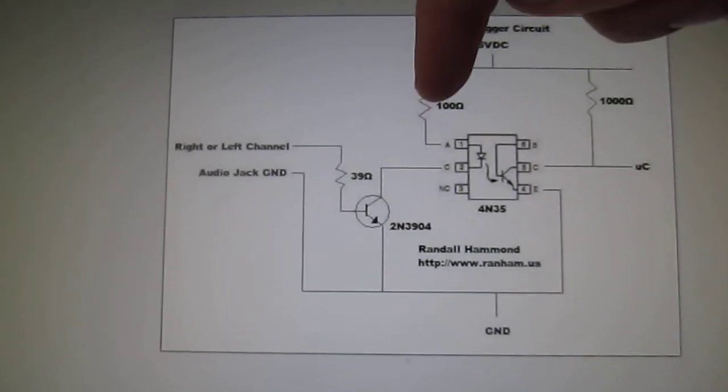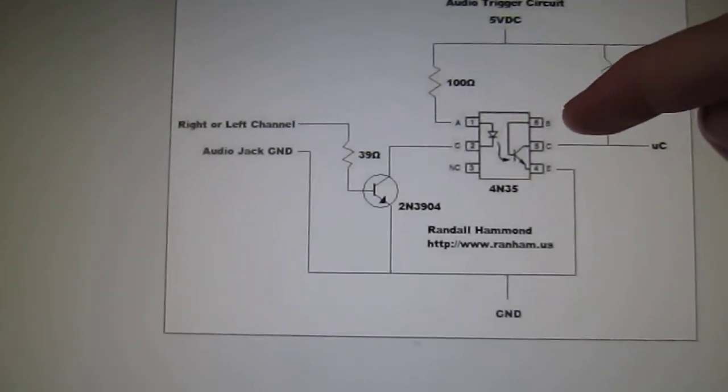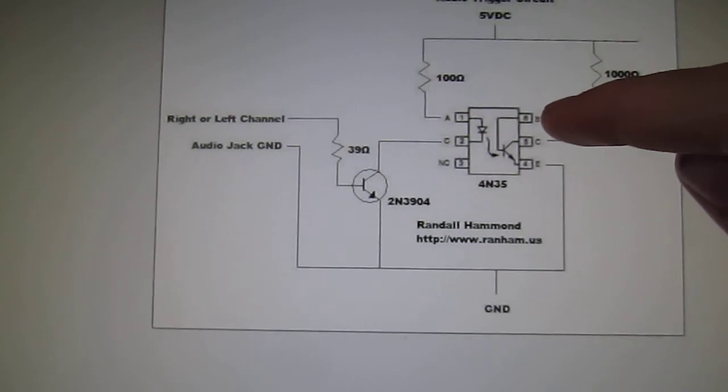And then this current limiting resistor, 100 ohm for the LED. And then on the transistor side of the opto-isolator, a base is floating.